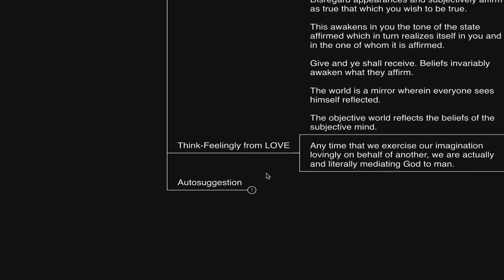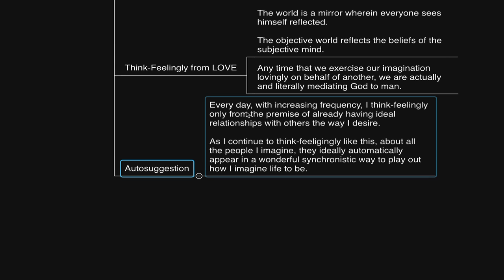So I trust you found this video to be helpful. Let's go ahead and conclude this with an auto-suggestion to further encourage. You could say, every day in increasing frequency, I think feelingly only from the premise of already having ideal relationships with others the way I desire. As I continue to think feelingly like this about all the people I imagine, they ideally automatically appear in a wonderful, synchronistic way to play out how I imagine life to be. If you would like a copy of this mind map, the link is in the description. Thank you very much for watching. I'll talk with you soon. Take care.